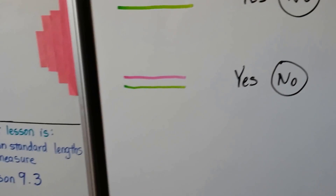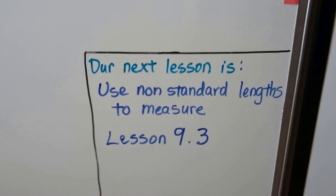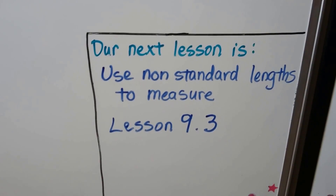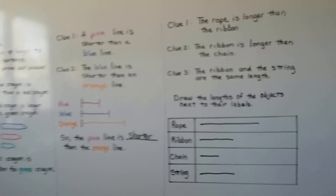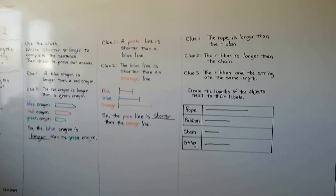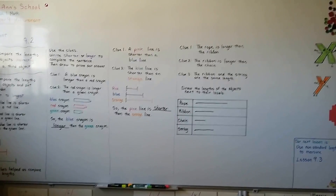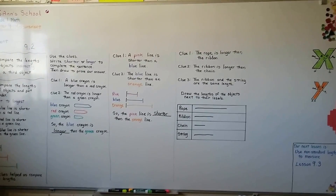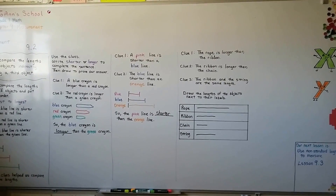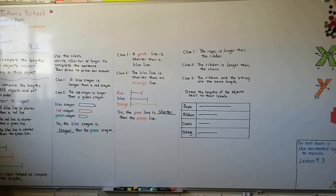Our next lesson is going to be using non-standard lengths to measure — that's lesson 9.3. You can find things around the house, your toys and other things in your kitchen, and compare which ones are shorter and which ones are longer. I hope you have a great day and I'll see you next time. Bye!